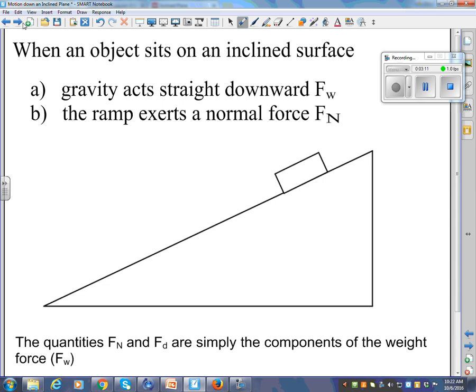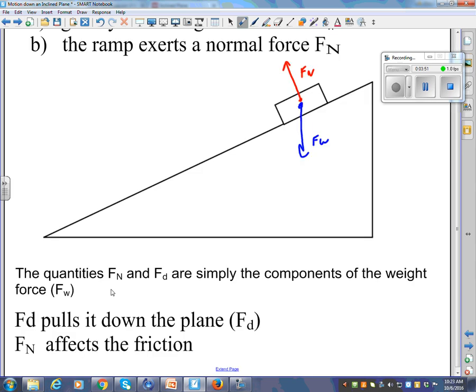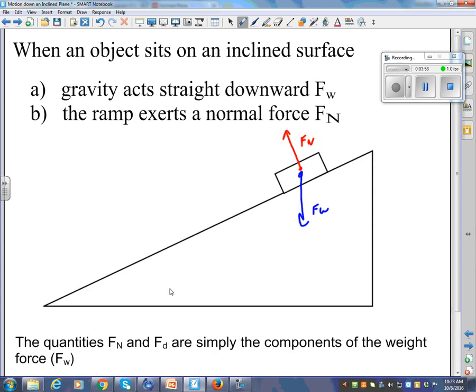So when an object sits on an inclined plane surface, gravity acts straight downward, we're going to call that Fw as always, weight force. And the ramp exerts a normal force, Fn. But you'll remember that Fn is defined as a force that the surface pushes with, and it's always perpendicular to the surface. Always perpendicular.